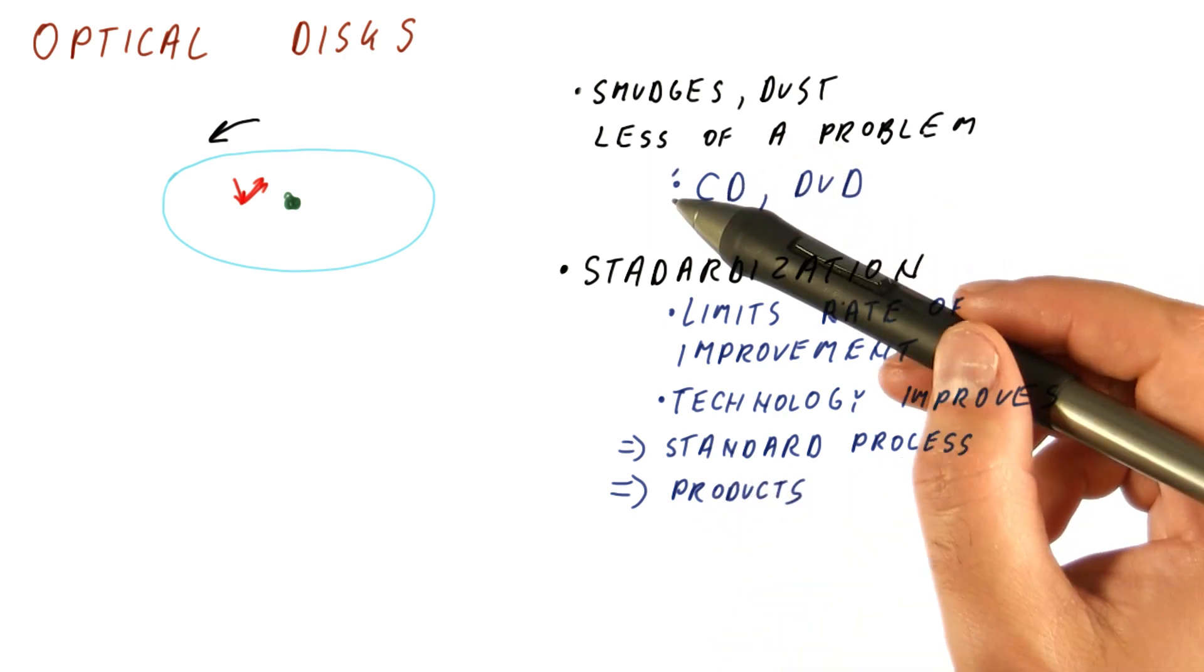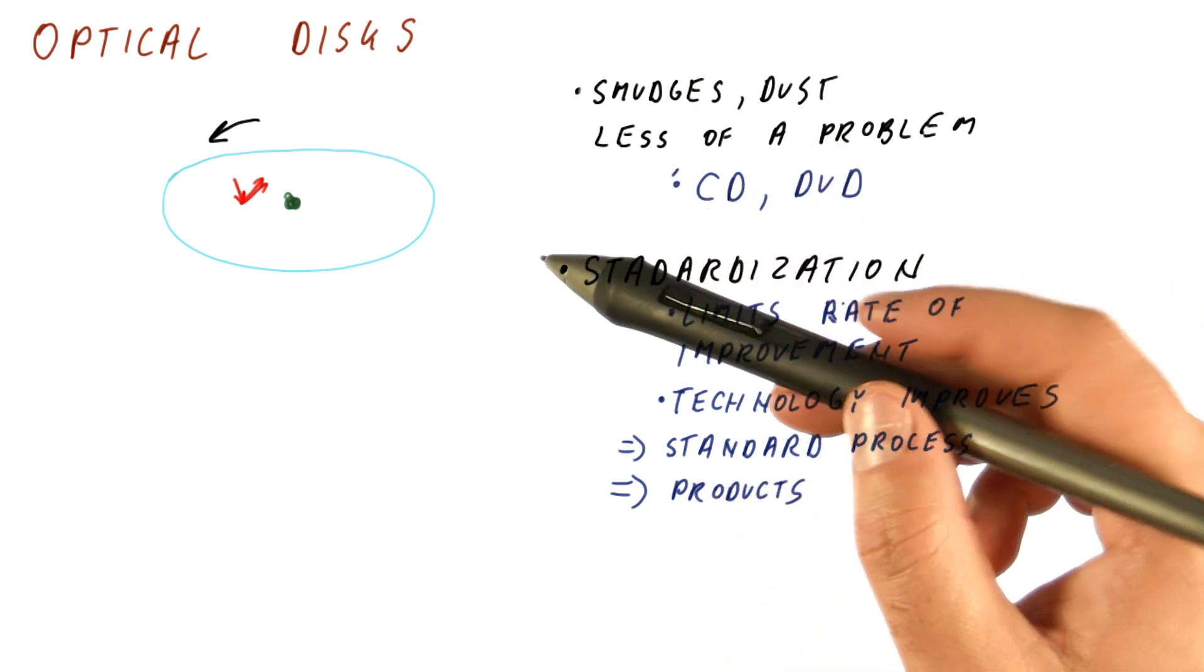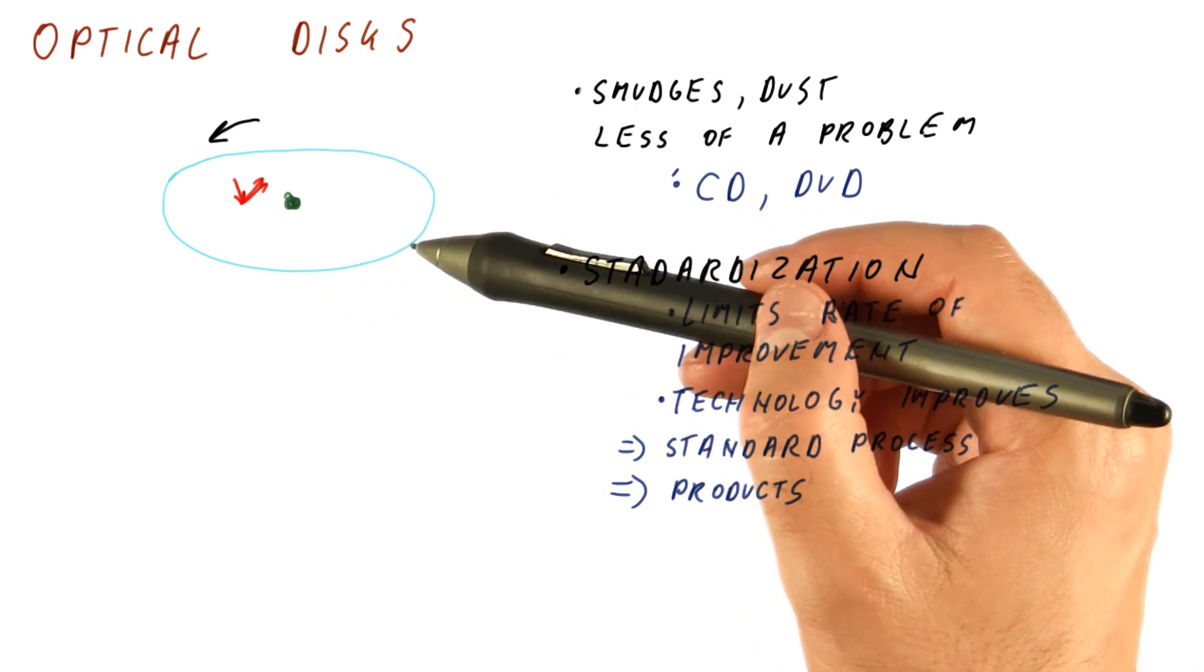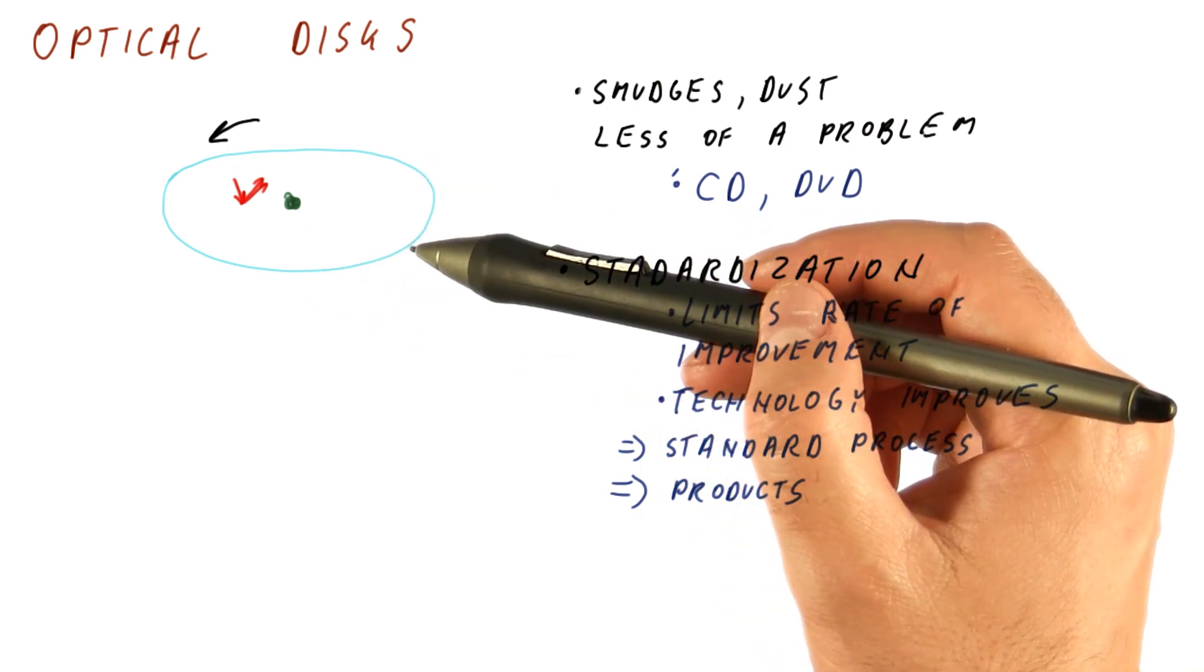In contrast, with hard drives, the whole enclosure needs to obey some standards about how to connect to the rest of the computer. But what happens inside the enclosure can be the latest and greatest technology in magnetic disks.